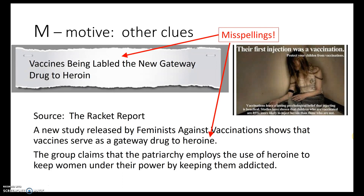Other things we might want to look for when examining this article to see whether it's trustworthy: notice that there are several misspellings. Good news sources are going to have journalists and editors looking for typos, misspellings, and formatting errors. That's not to say these things never make it through on good publications, but you're more likely to see them in articles that really aren't that trustworthy.